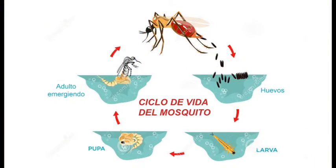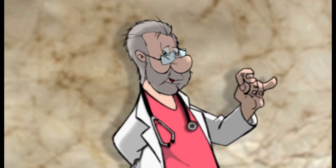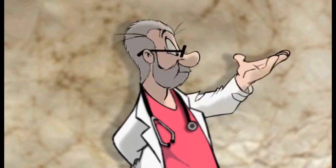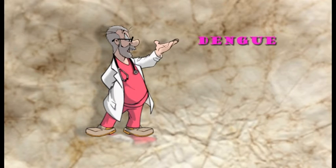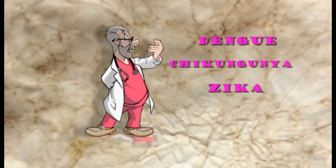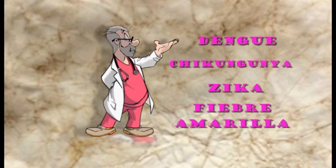Today I am going to tell you about the life of the mosquito Aedes aegypti, which, if it bites you, can transmit four diseases: dengue, chikungunya, zika, and fiebre amarilla (yellow fever).